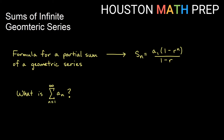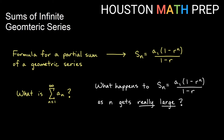From our previous video about the partial sums of geometric series, we had a formula. We're going to use this to analyze what happens with an infinite geometric series — in other words, what happens as we sum a sub n from 1 to infinity. We'll look at using r repeatedly and see what happens to the r value for the partial sums when n gets really, really big.